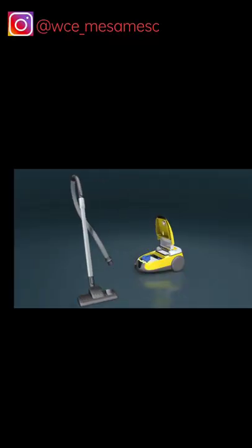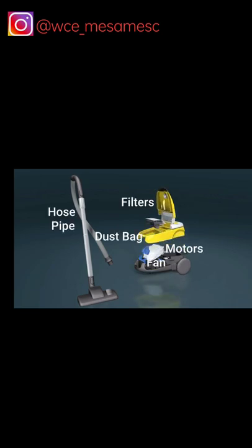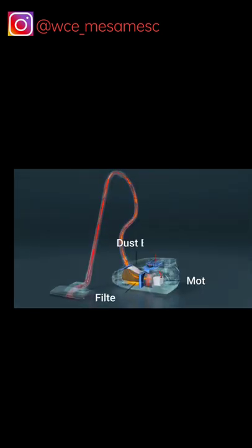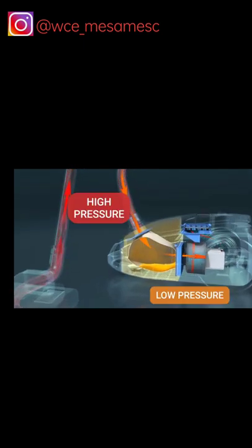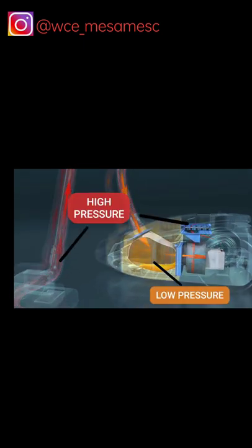A vacuum cleaner is a form of technology. It consists of a hose pipe, dust bag, fan, motor, filter, and lots of electronic components. It takes up dust from the floor with the help of external pressure when the pressure in front